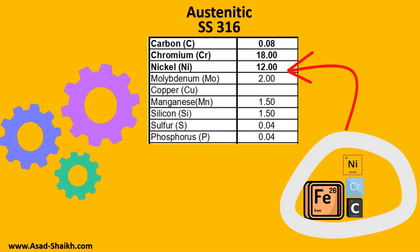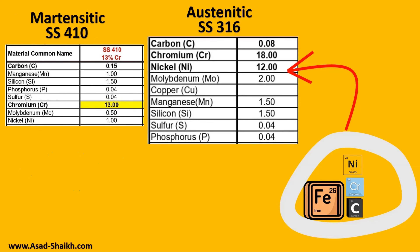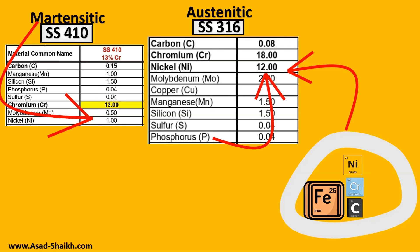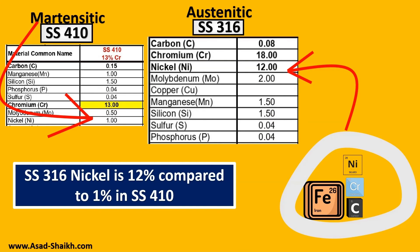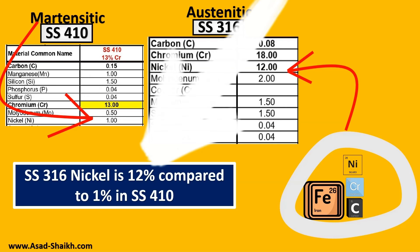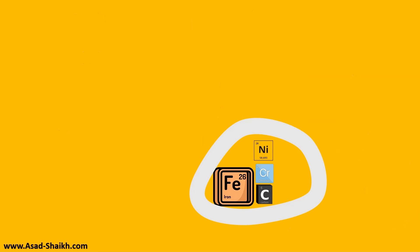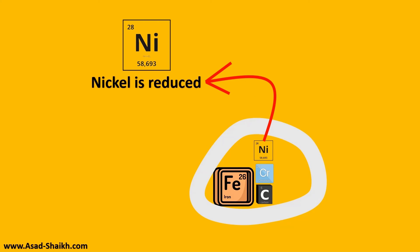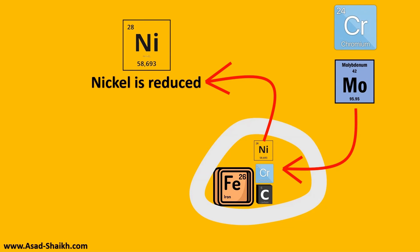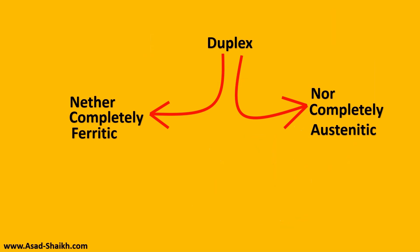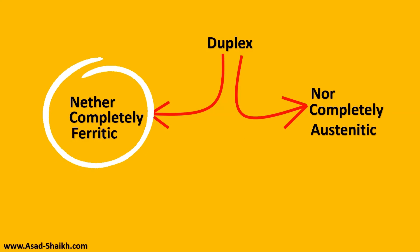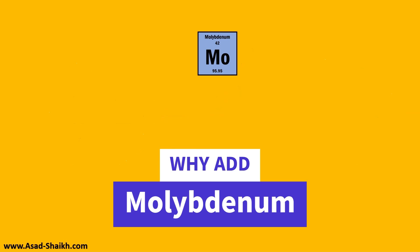SS316 has been used in a lot of engineering projects. Comparing SS316 to martensitic stainless steel, the nickel percentage in SS410 is just 1%, while in SS316 the nickel percentage goes up to 12% — a huge change. Now let us look at duplex and super duplex. What we do is reduce the nickel component and instead increase chromium and molybdenum. Because nickel is reduced, the material is neither completely ferritic nor completely austenitic.